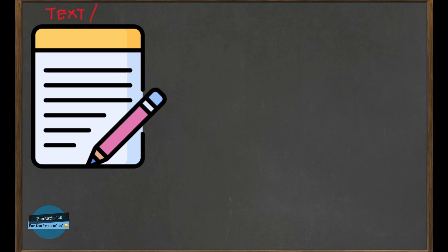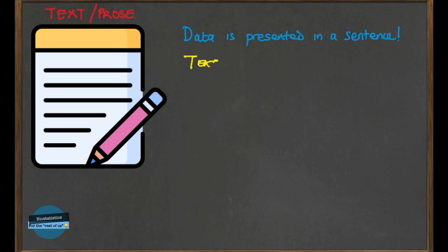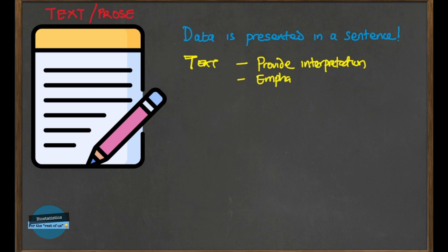Let's talk about text presentation of data. With text presentation, data is fundamentally presented in the form of paragraphs or sentences. When the text is written, it is used to provide interpretation of findings — maybe of a study that has been done and analyzed. Or sometimes you just want to highlight a certain aspect of your data that you have in your results.